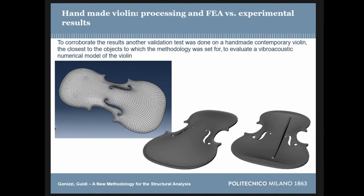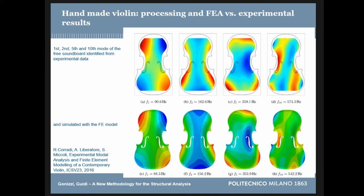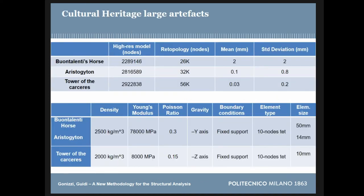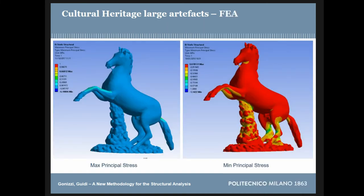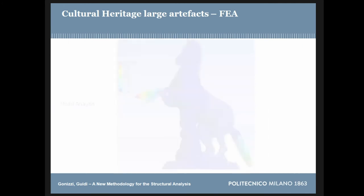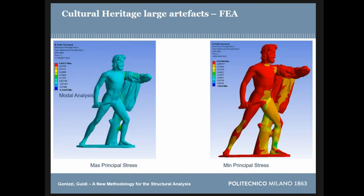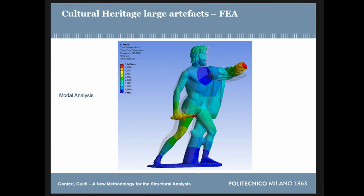Another test was done on a violin. I only created the volumetric model, and colleagues performed the analysis. They were able to do some laboratory analysis to compare, and it was another confirmation that the methodology works. Moving to cultural heritage, these are the three models and the parameters for the static structural analysis. This is the comparison and the results for the maximum principal stress and the modal analysis, to check and confirm the method.